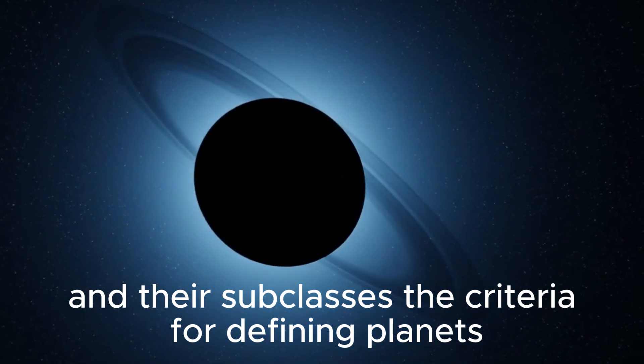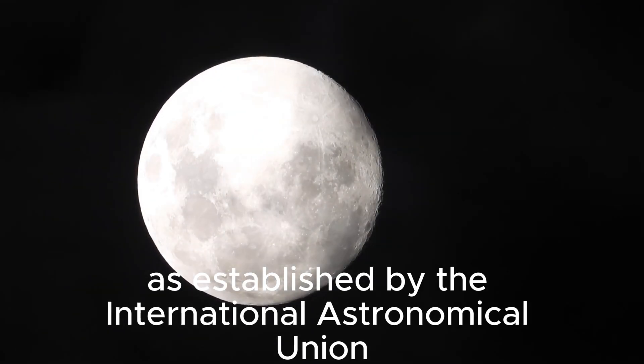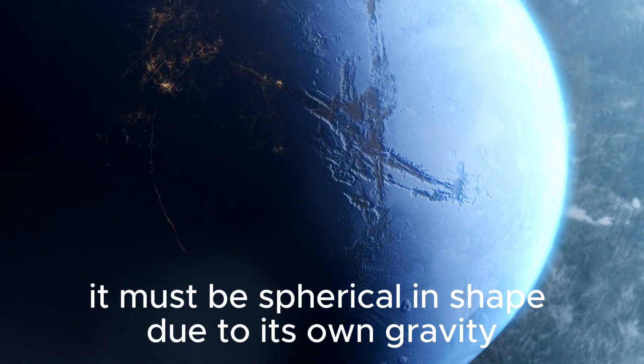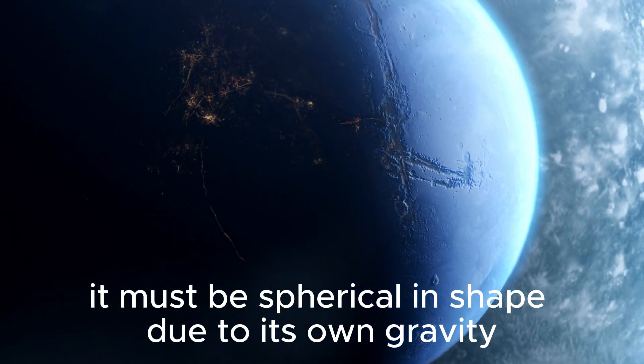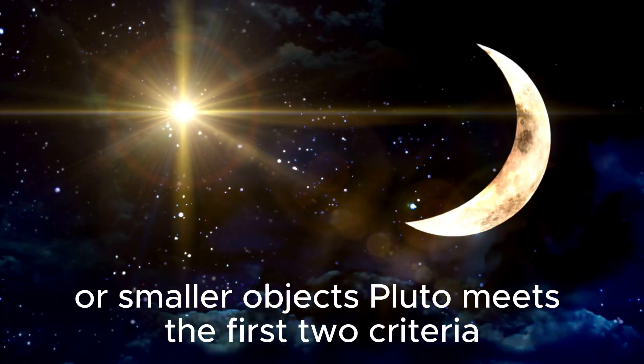The criteria for defining planets, as established by the International Astronomical Union, include three primary conditions: the celestial body must orbit the Sun, it must be spherical in shape due to its own gravity, and it must have cleared its orbital path of other debris or smaller objects.